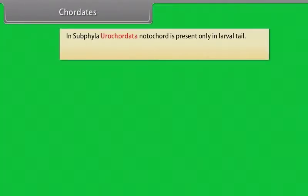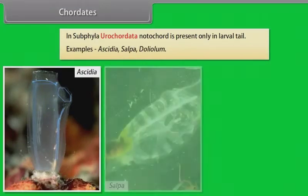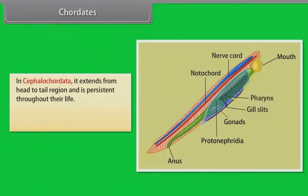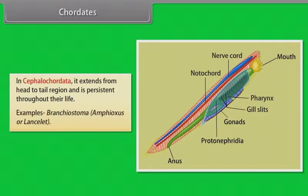In sub-phylum Urochordata, notochord is present only in the larval tail. Examples: Ascidia, Salpa, Doliolum. In Cephalochordata, the notochord extends from head to tail region and is persistent throughout their life. Examples: Branchiostoma, Amphioxus, and Lancelet.